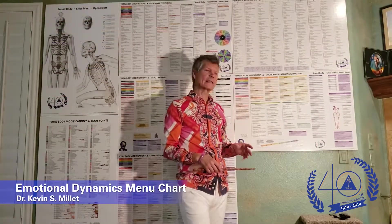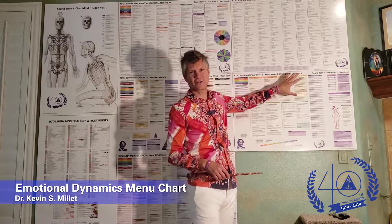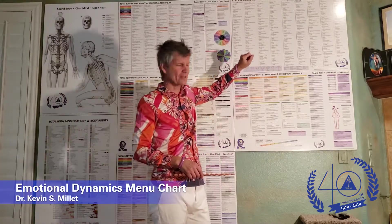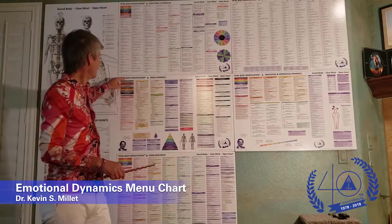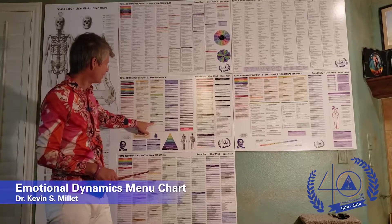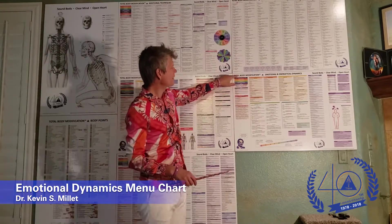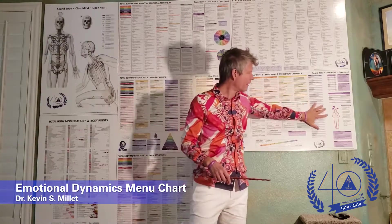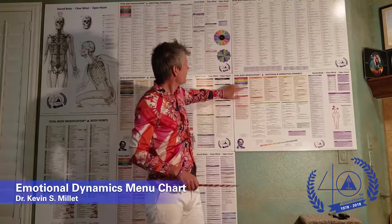I want to take a few minutes and talk about the emotional and energetical dynamics chart, and also the emotional races and program sequences chart. From the menu, go to menu dynamics, then menu down to menu charts, jump to menu charts, come down to emotional and energetical dynamics. In the top left corner is a legend that has everything more or less that's listed on the chart.